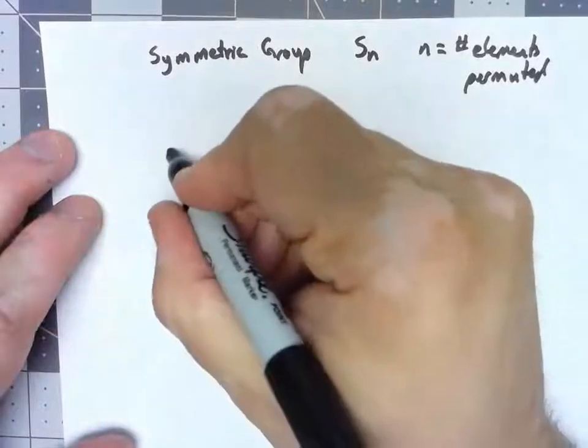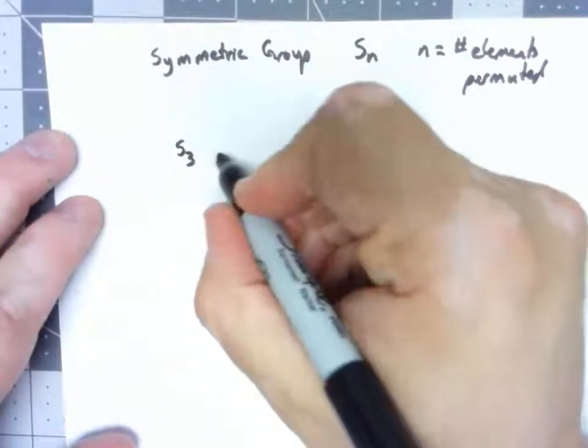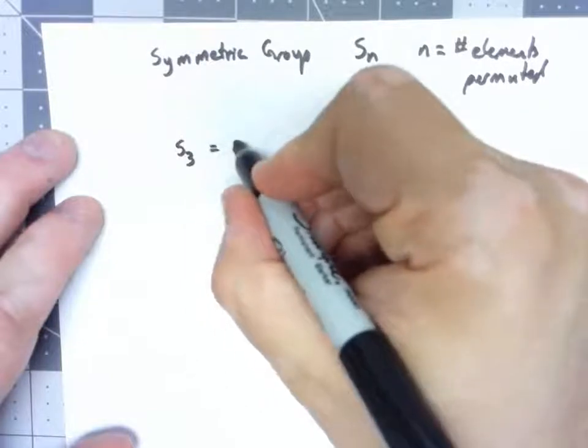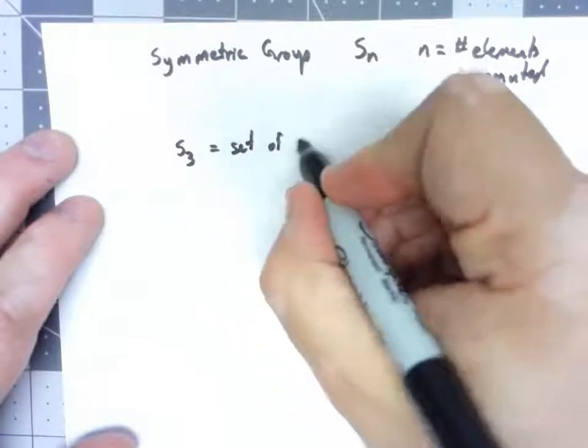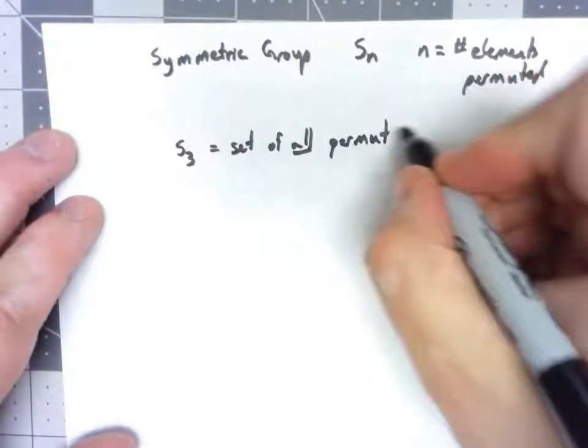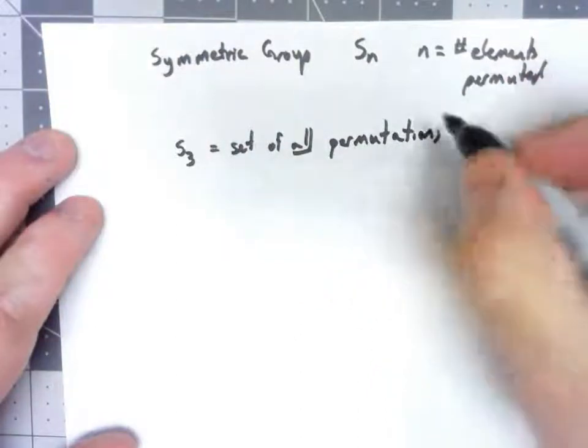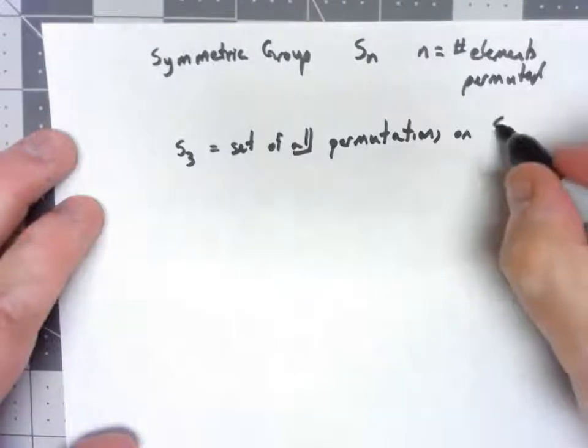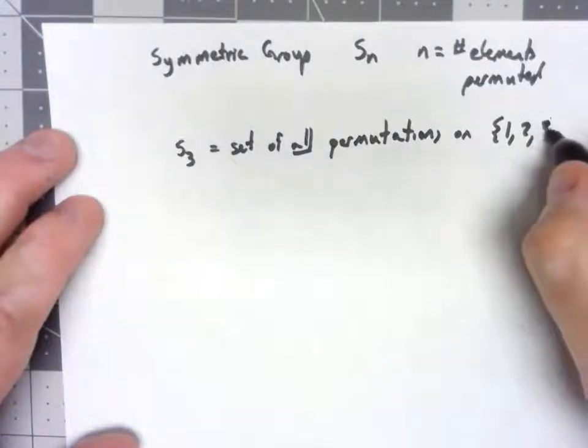So for example, S3 is the set of all permutations on the set 1, 2, 3.